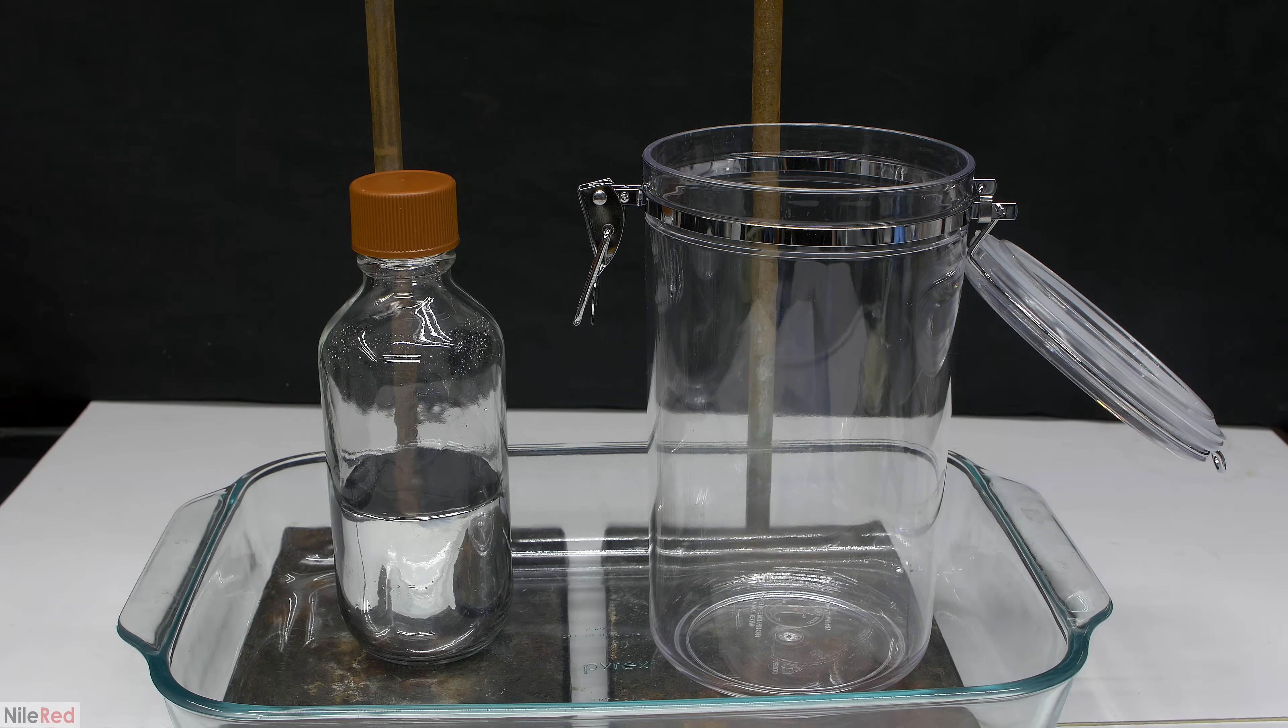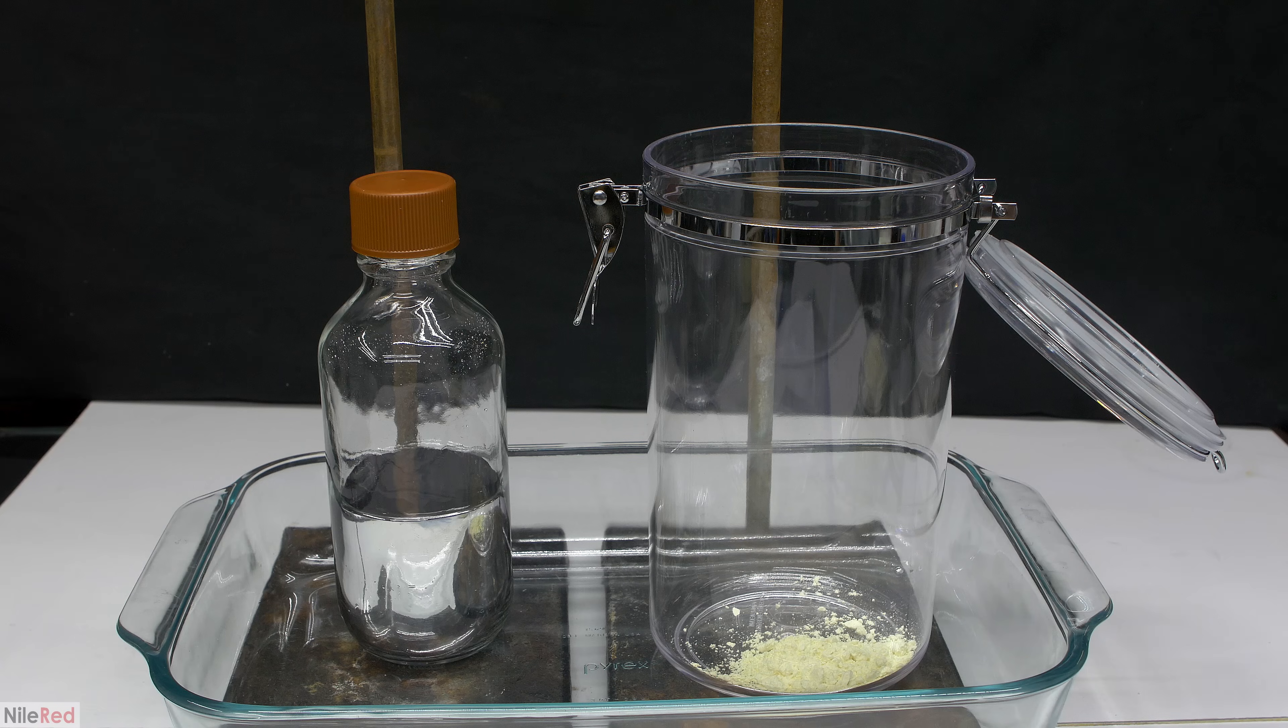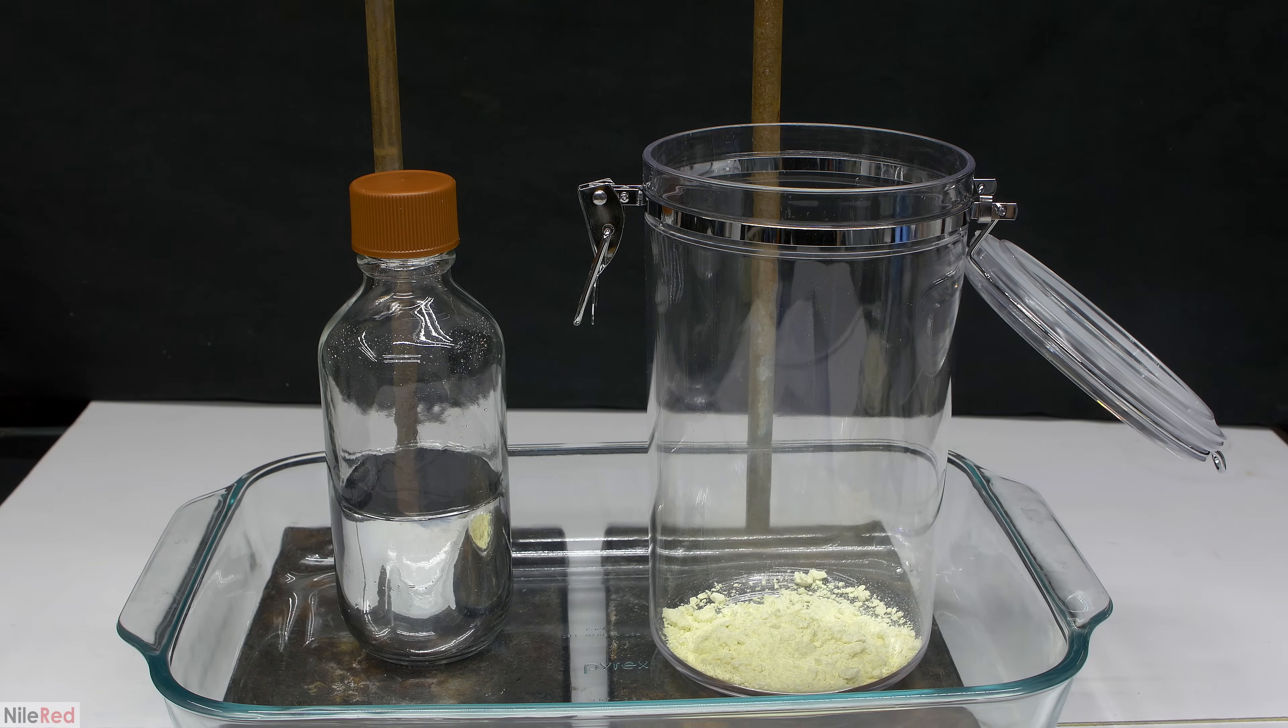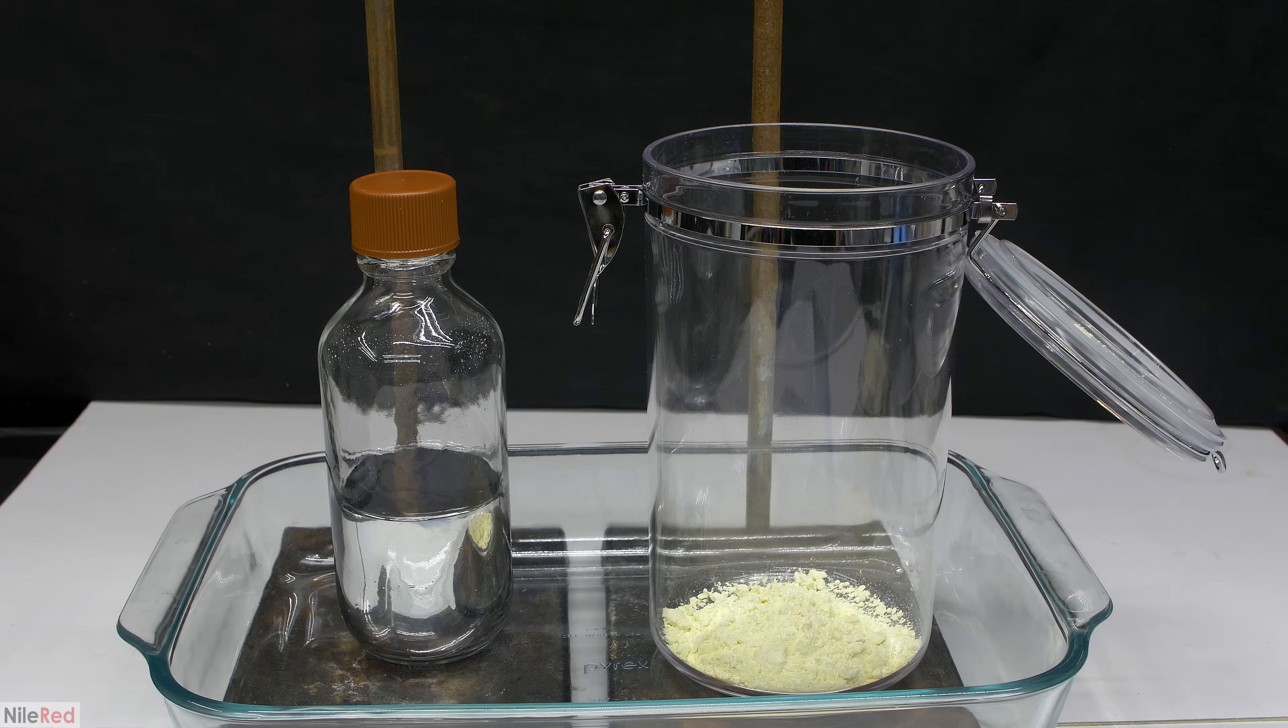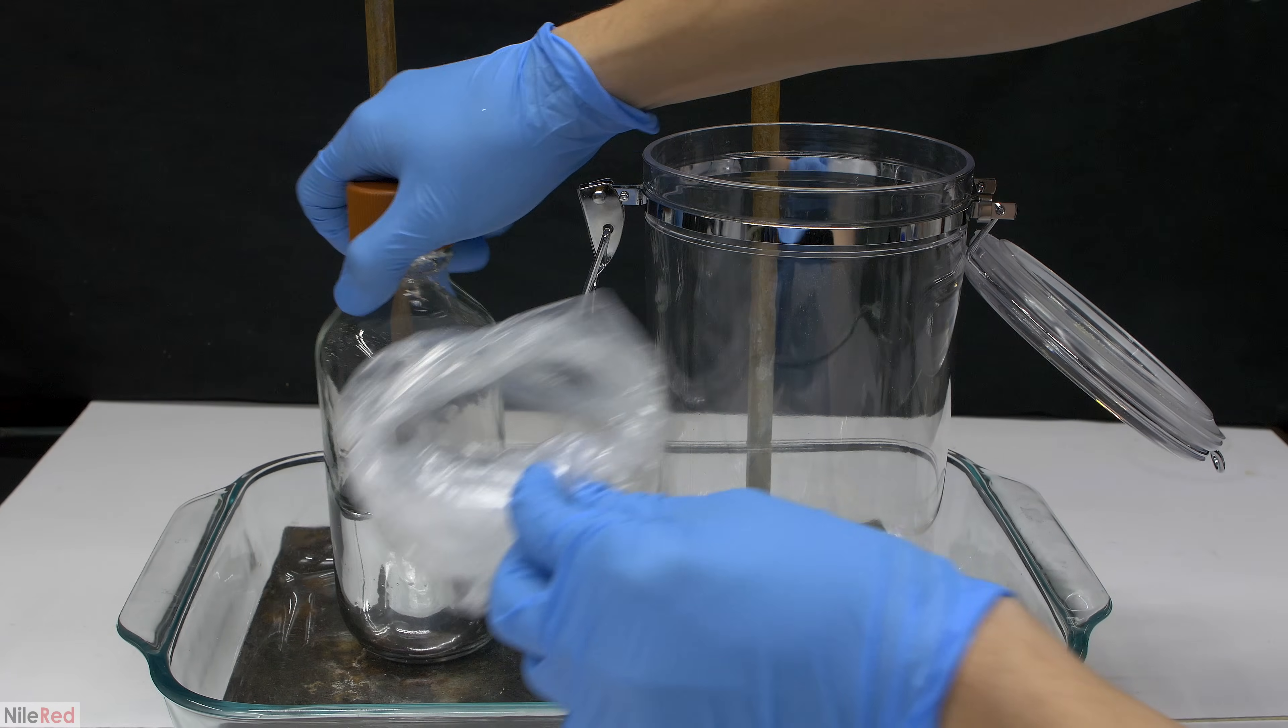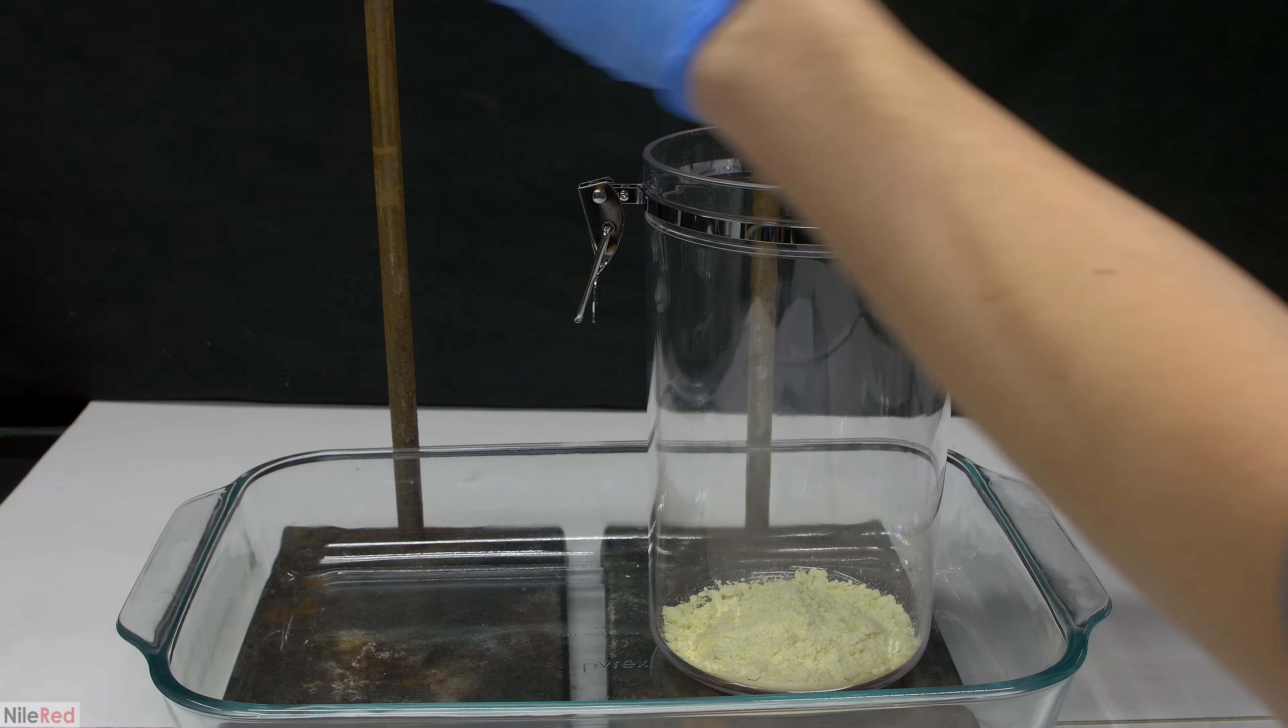Before I put the mercury bottle in, I dump in some sulfur. The reaction between mercury and sulfur is extremely slow at room temperature, but it's still useful to add. For short-term storage it would make no sense, but for long-term storage, if any mercury vapor were to escape the bottle, it would have enough time to react with the sulfur.